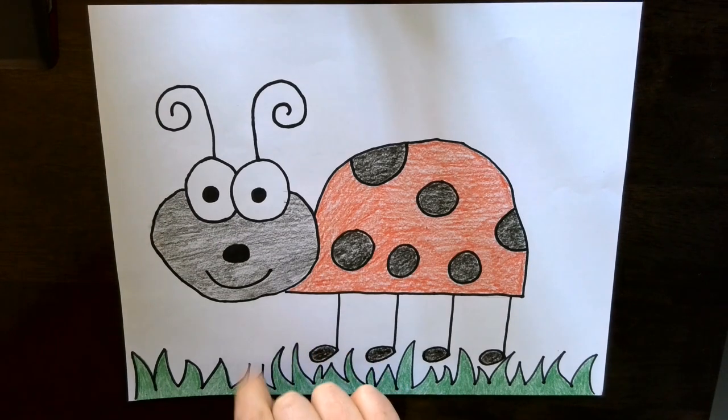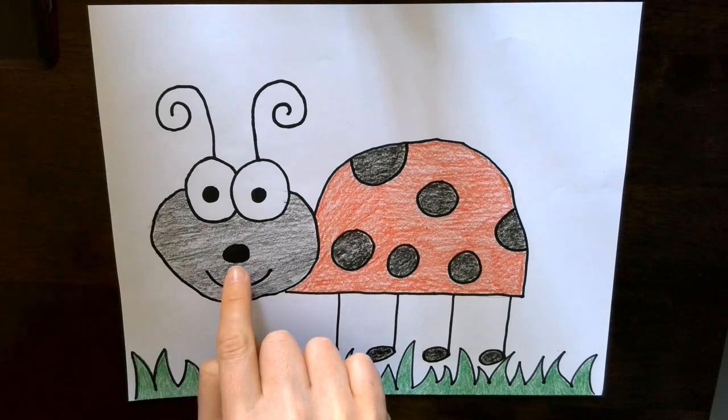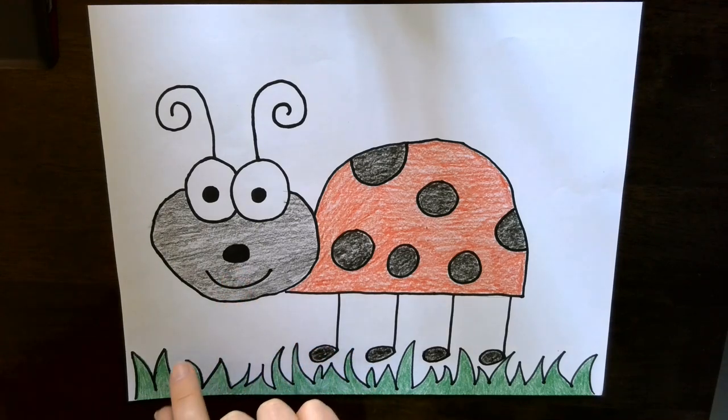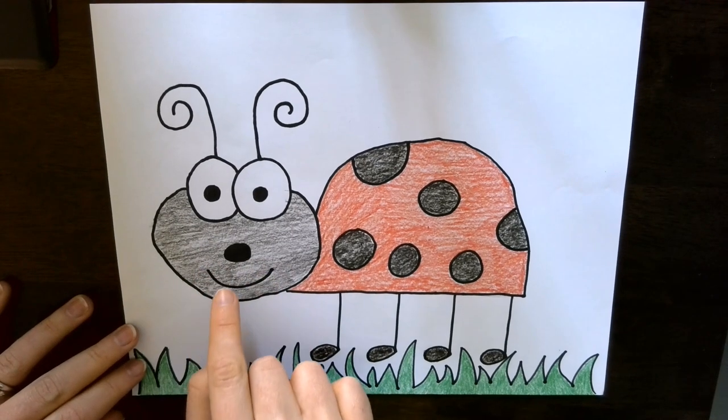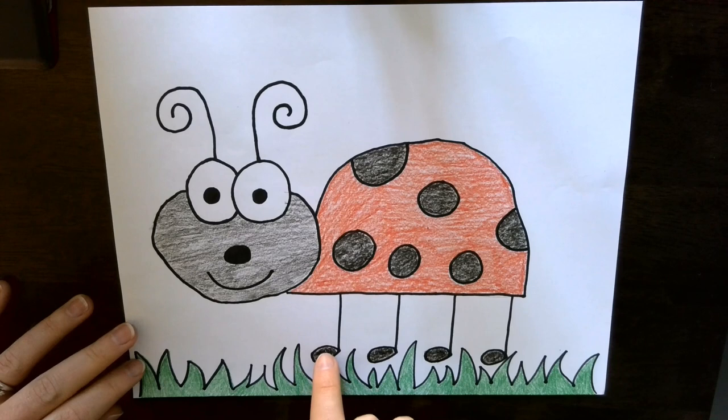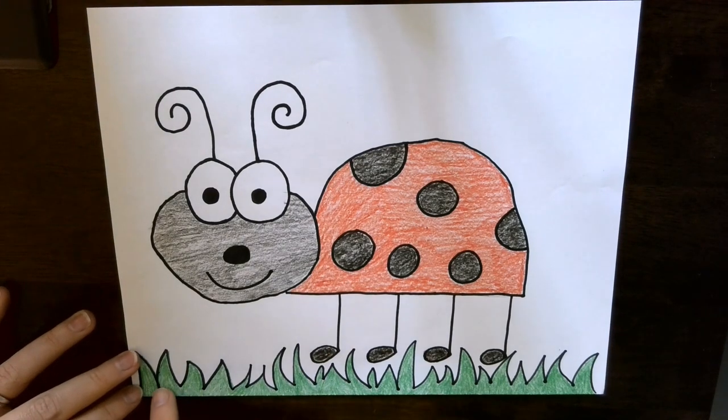Now I wanted the face to be black as well but I wanted to make sure that the sharpie lines of the nose and the smile still showed up, so I used the same black crayon but I just colored much lighter than I did for the spots and the feet. You can see that of course I made the grass green.